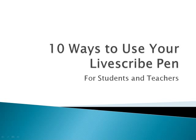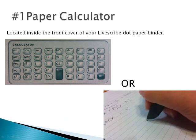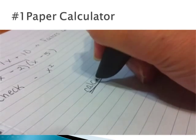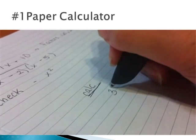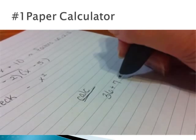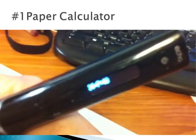10 Ways to Use Your Livescribe Pen. Inside the front cover of your Livescribe dot paper is a scientific calculator. You can also draw a short horizontal back and forth line and write the word CALC on top of the line. The Echo Smart Pen will prompt you to write a math problem and then give you the answer on the OLED screen.